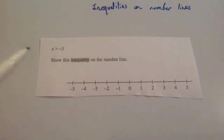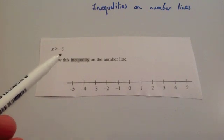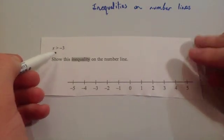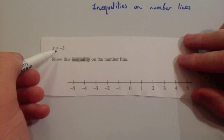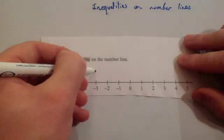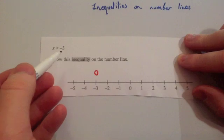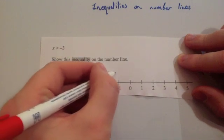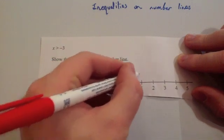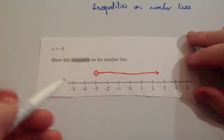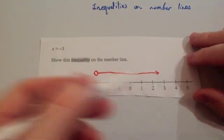Let's have a look at some typical questions. This question says x is larger than minus 3 — show this inequality on the number line. Because it's just larger than, you go to minus 3 and put a hollow circle. And because it's larger than minus 3, you put an arrow to the right, extending it for quite a while. That means x is going to be bigger than minus 3.